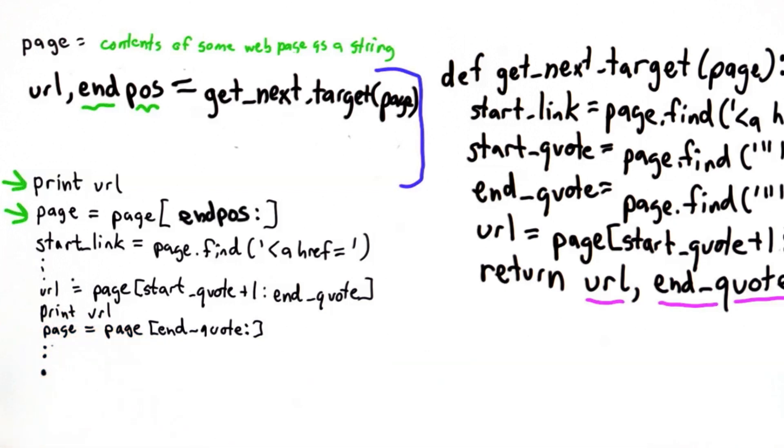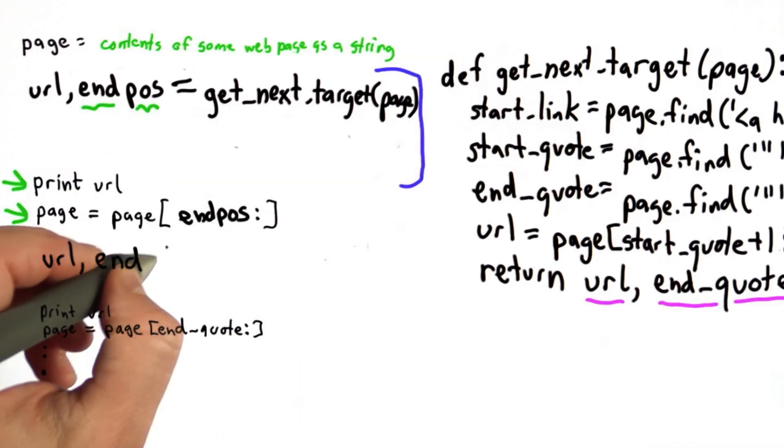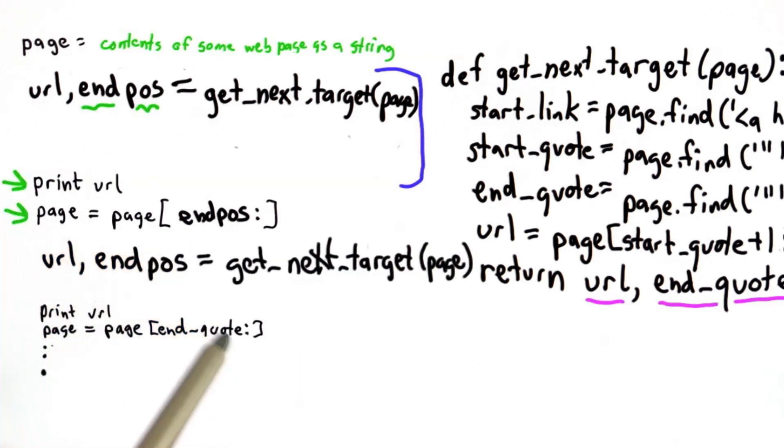And then we're doing it all again, right? So all of the code here is just another call to getNextTarget. And similarly, this would be endPause instead of endQuote. And we want to keep going until we get to the end.